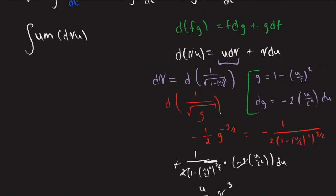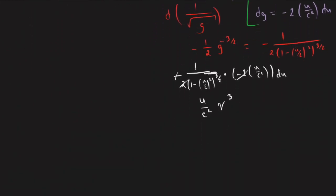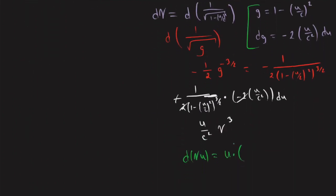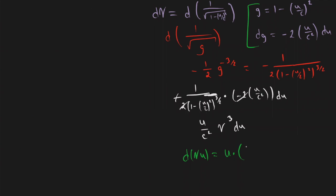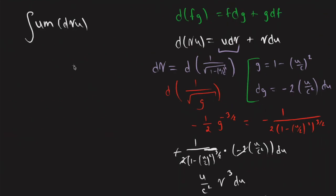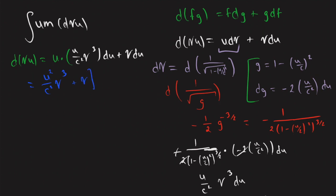So now d(gamma u) is equal to u times u/c squared gamma cubed du plus gamma du. We can simplify this: we're going to have u squared over c squared times gamma cubed, plus gamma, all times du. So let us think about what we can do, because this looks like a pain — this is not something I'd like to integrate directly.